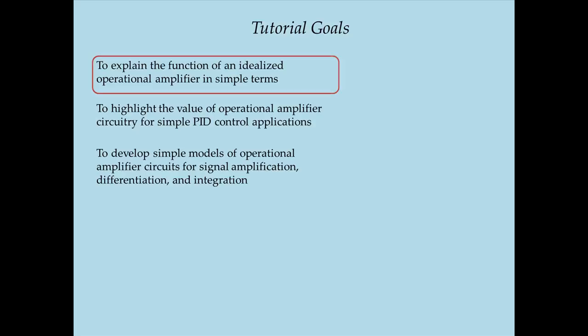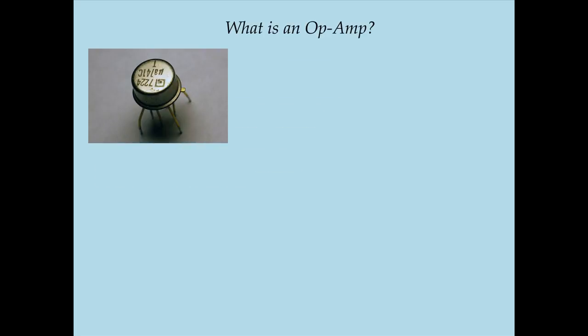The first goal is to explain the function of an idealized operational amplifier in very simple terms. Here's a picture of an operational amplifier borrowed from Wikimedia Commons, and here is the traditional circuit symbol for an op-amp. An operational amplifier is a device that in real life has multiple pins. The pins that matter in a simple circuit diagram are the non-inverting pin, labeled with a plus, the inverting pin, labeled with a minus — both input pins — and the output pin.